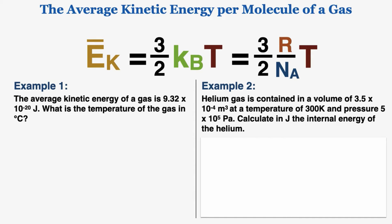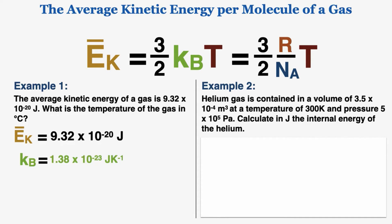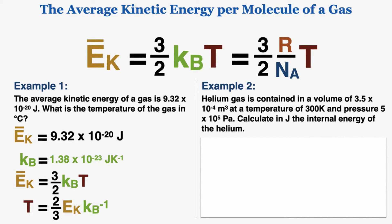Using the equation on its own is pretty simple. In Example 1, the average kinetic energy of a gas is 9.32 × 10⁻²⁰ joules. What is the temperature in degrees Celsius? Plugging the average kinetic energy and Boltzmann's constant into the equation and rearranging gives 4,500 Kelvin. Since the question asks for degrees Celsius, subtract 273 to get 4,227 degrees Celsius.